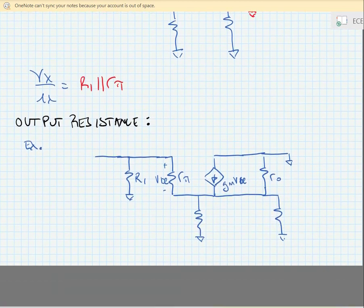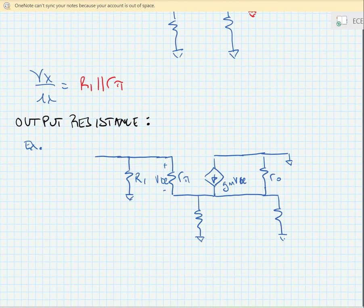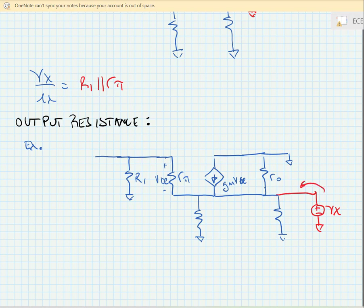Similarly, if we want to find the output resistance, we can look at the same circuit, only now we're going to place our test voltage source at the output node, measuring the current I sub X that flows into it. We're going to short the input node.